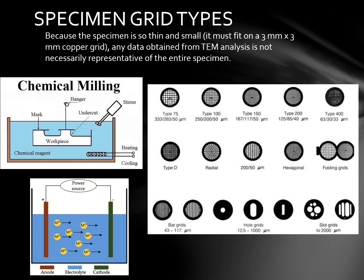Finally, we will discuss specimen grid types. Because the specimen is so thin and small, it must fit on a 3x3 mm copper grid. Any data obtained from TEM analysis is not necessarily representative of the entire sample. There are quite a variety of grid types available, ranging from 25 to 100 microns, with hole width varying from 25 to 288 microns. Grid materials available include pure copper, pure nickel, pure gold, copper with rhodium flash, stainless steel, tungsten, aluminium, molybdenum, nickel with pure gold flash, copper with pure gold flash, copper with palladium flash, carbon nylon grids, carbon composite grids, and beryllium grids, to name a few.